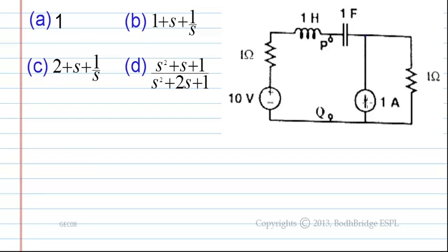In the given circuit, we have a current source and also a voltage source. To find the Thevenin Equivalent Impedance between points P and Q, we have to replace the voltage source with a short circuit and the current source with an open circuit.